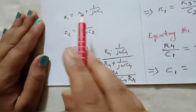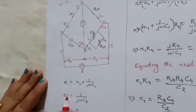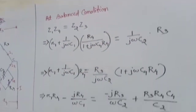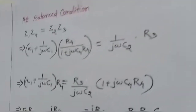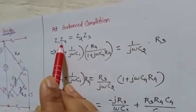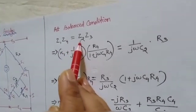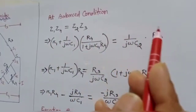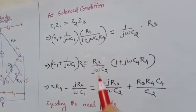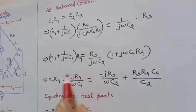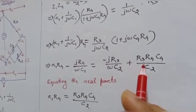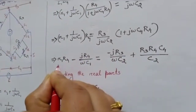These are the four impedance values. Now we have to apply the balance condition and find the values of R1 and C1. The balance condition is Z1·Z4 equals Z2·Z3. Putting all the values into this equation and solving further, we arrive at a new equation from which we equate the real and imaginary parts.